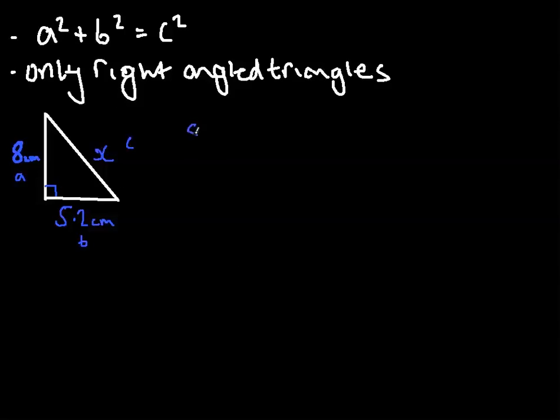So, a squared would be 8 squared plus b squared would be 5.2 squared equals x squared, which is c. So, if we times these all out, we can get 64 plus, just on the calculator, if you like it out. So, 5.2 squared equals 27.04 equals x squared.